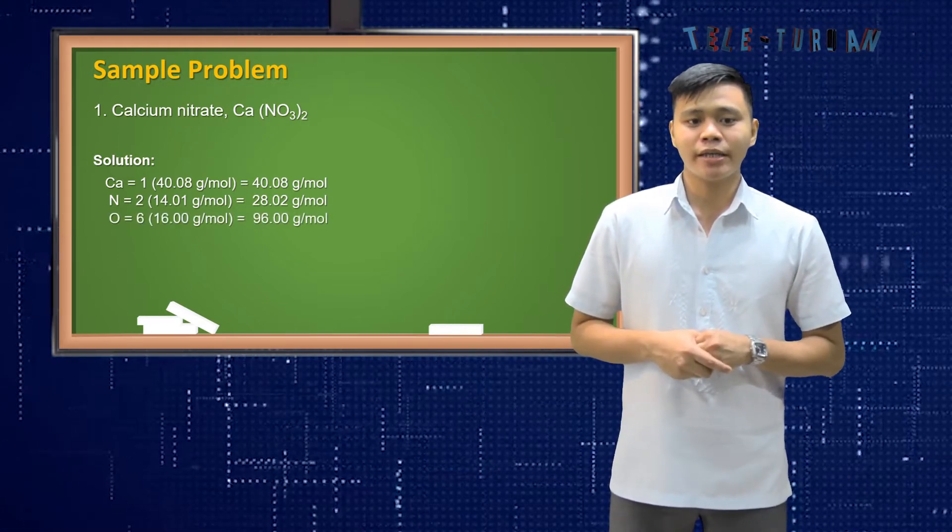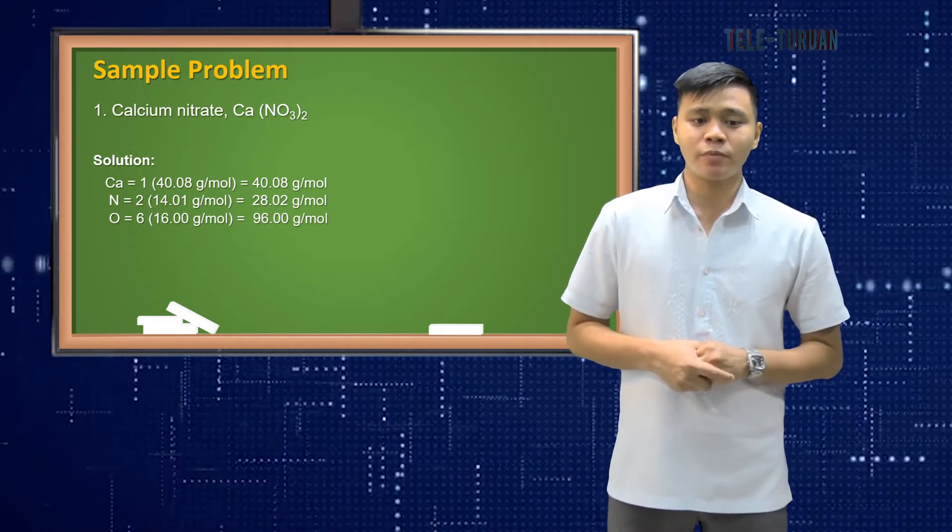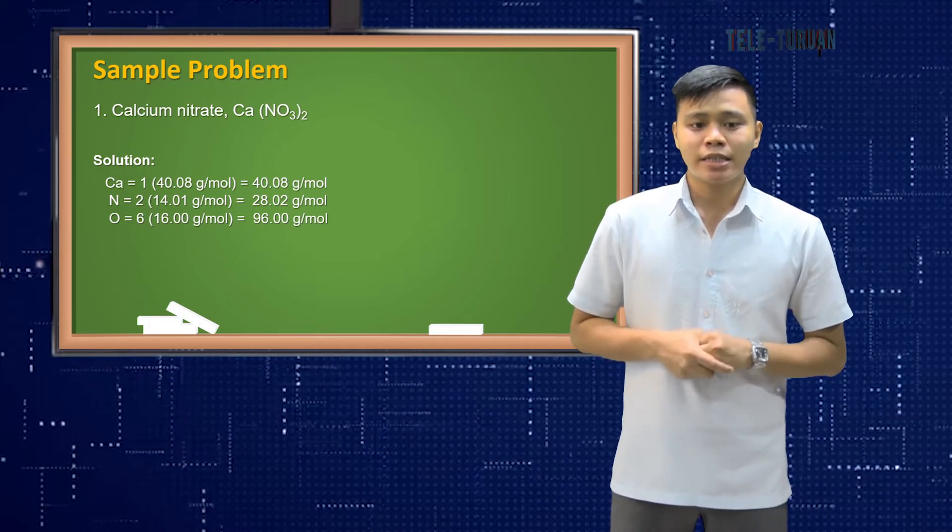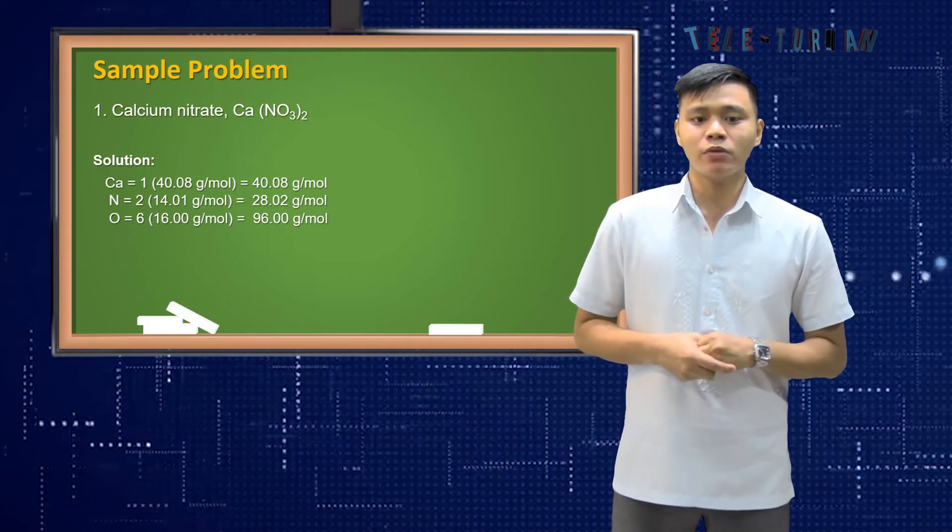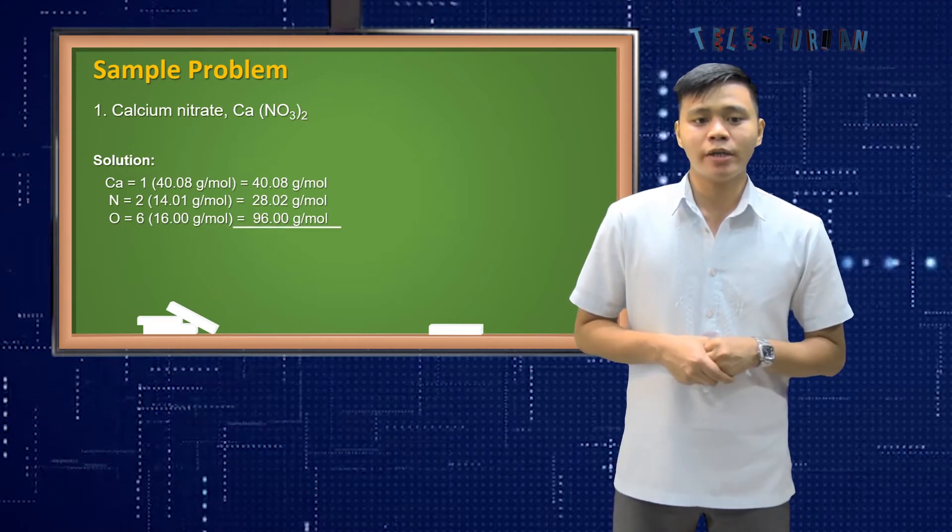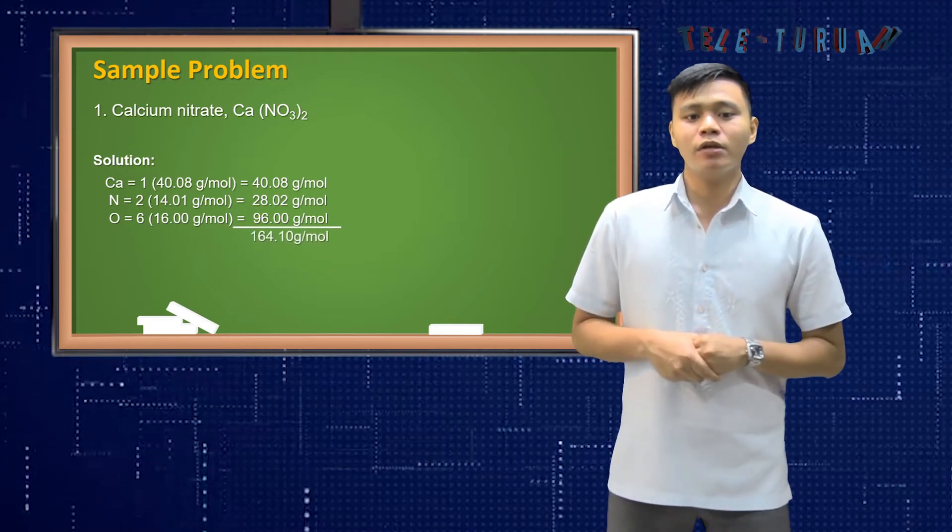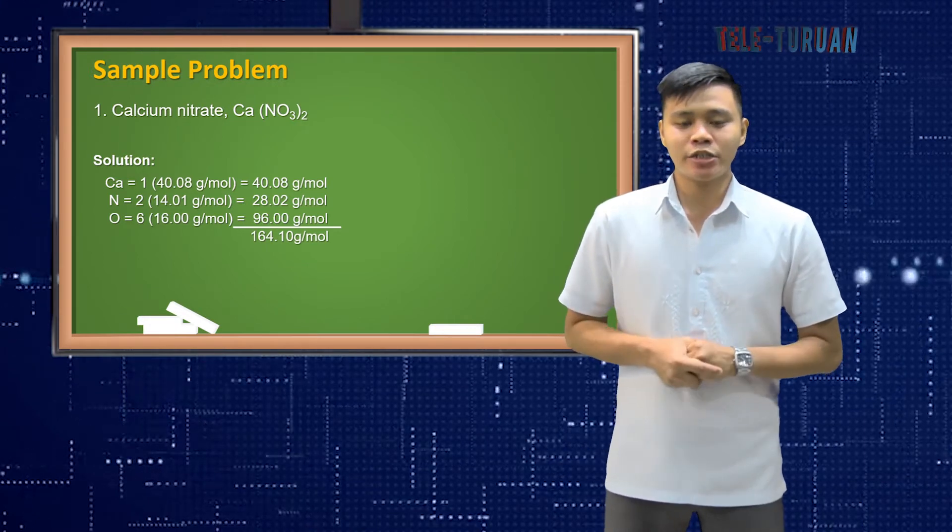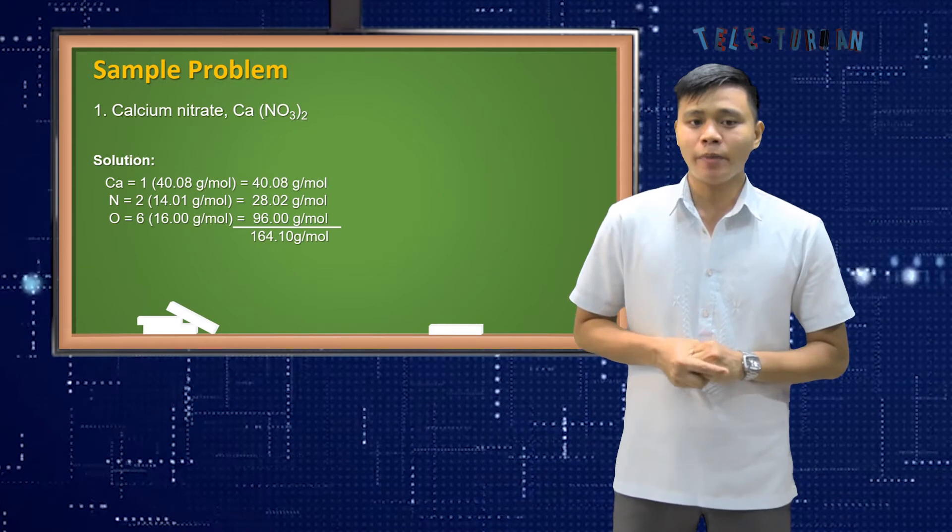For oxygen, we have six atoms in the compound of calcium nitrate. So 6 times its molar mass equal to 16.0 grams per mole is equal to 96 grams per mole. So adding all the molar masses, it is equal to 164.10 grams per mole.